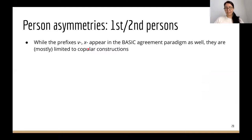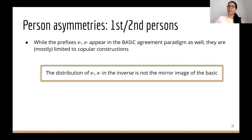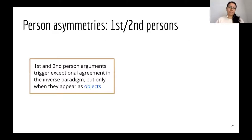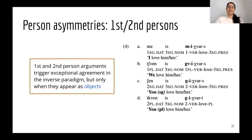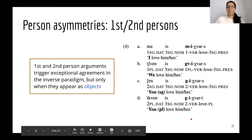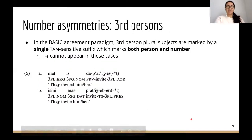The same pattern holds for second person objects in the inverse: 'I love you' and 'he loves you plural' show marking with 't' if plural, along with the dummy 'r' 'be' on the verbal complex. These prefixes do appear in the basic paradigm as well, but mostly limited to copular constructions. So we can characterize this as: first and second person arguments trigger exceptional agreement in the inverse paradigm but only when they appear as objects. When first and second person arguments appear as inverse subjects, they just trigger the person prefixes seen in the basic paradigm.